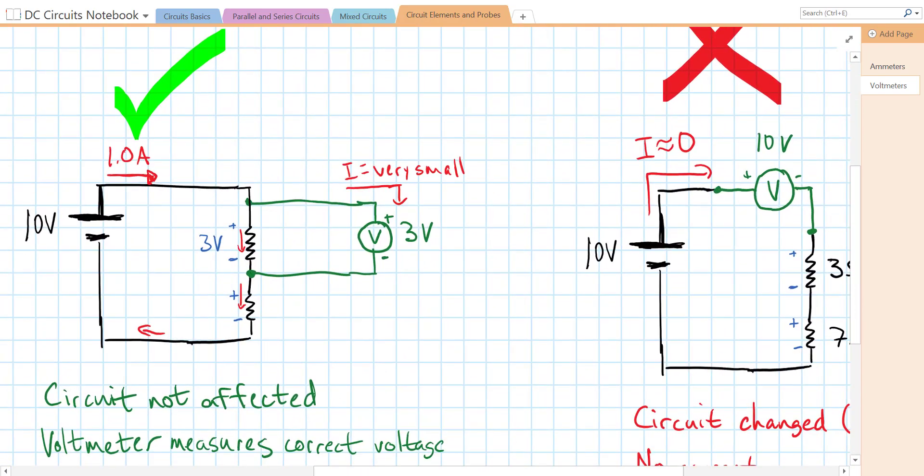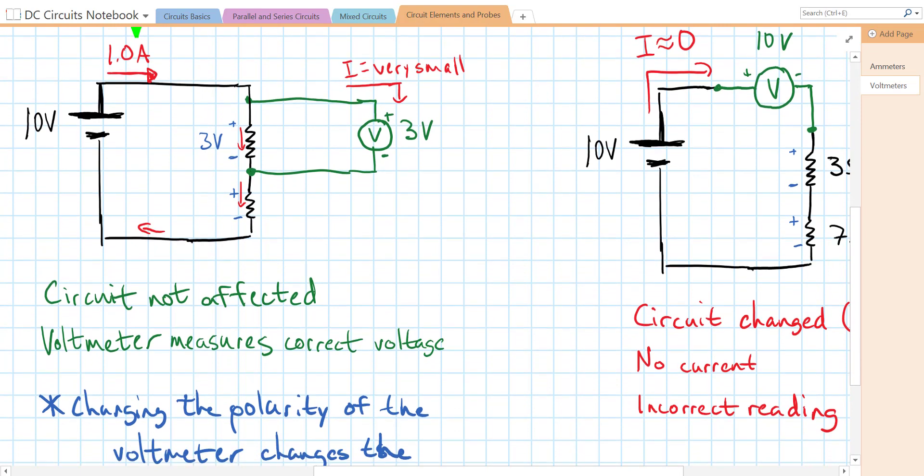Here on the left, we have the correct way to do it. We connect our voltmeter here in parallel with our 3 ohm resistor. And because our voltmeter has an infinite resistance, or very close to infinite, very high, that means the current that runs through the voltmeter itself is incredibly small, which means all of the original current is going to go straight down through that 3 ohm resistor as always.